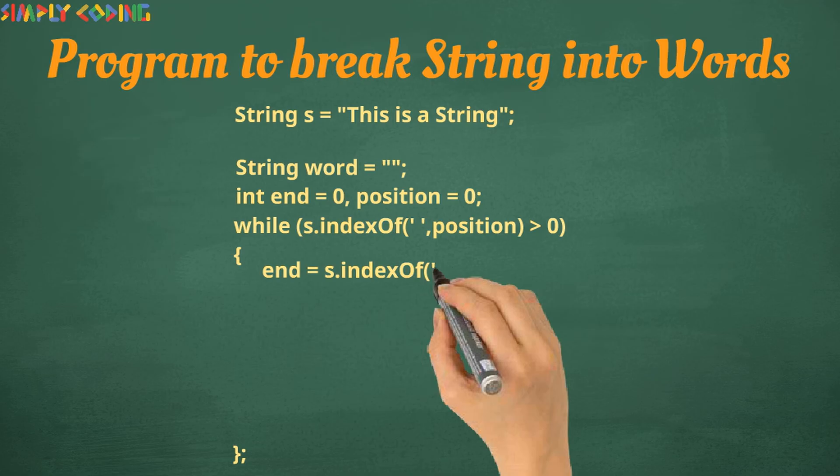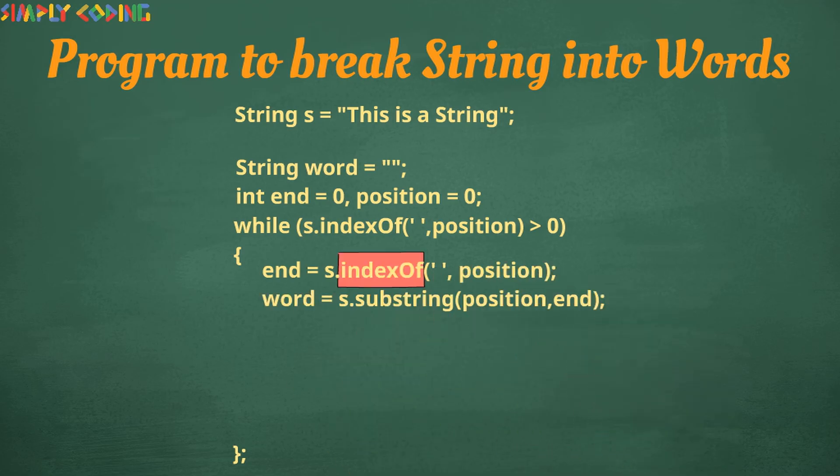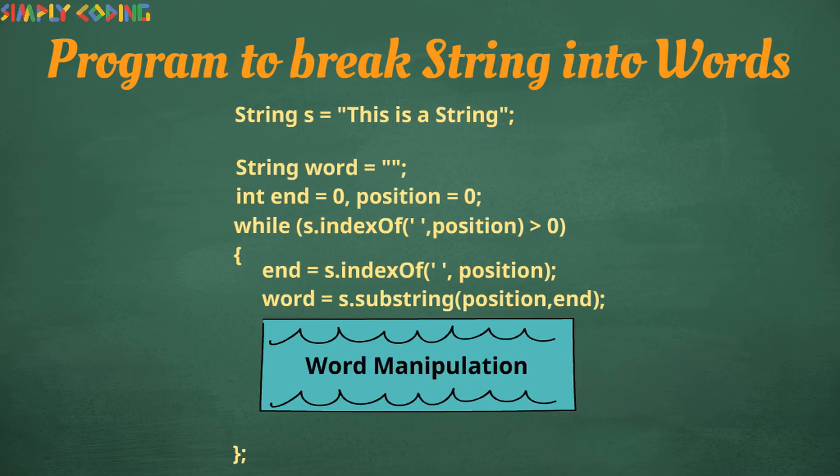Now within the loop, we will first get the end pointer of the word by using indexOf method for space. Then we will use substring method to extract out our word. After this will come some code to manipulate our word. But before the loop ends, we will update the position after the space so that the indexOf searches for next space.